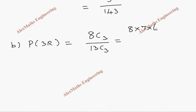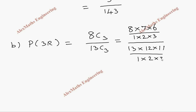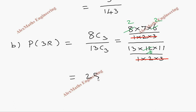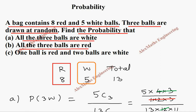8C3 is 8 into 7 into 6 divided by 1 into 2 into 3, divided by 13 into 12 into 11 by 1 into 2 into 3. We cancel the common denominators, then cancel further — 8 with 4 gives 2, and that becomes 3, then again we cancel to get 3. Totally the numerator is 28 and the denominator is 143.